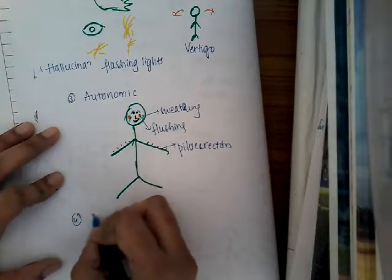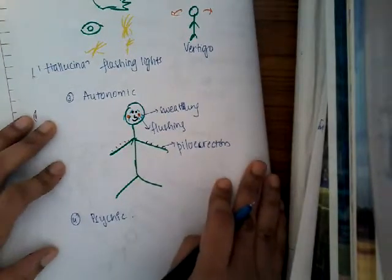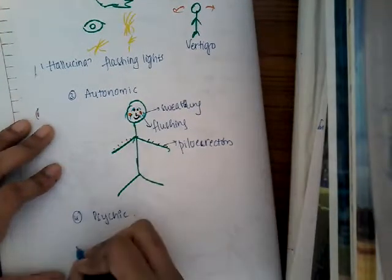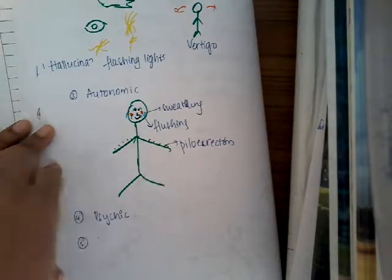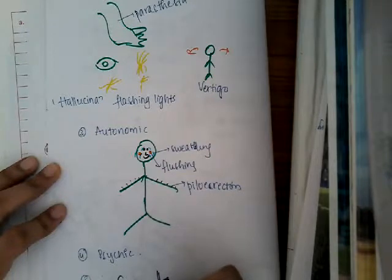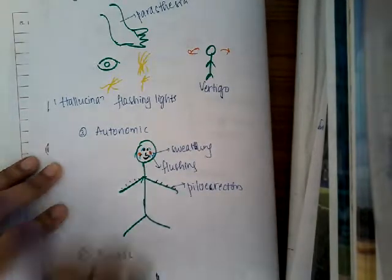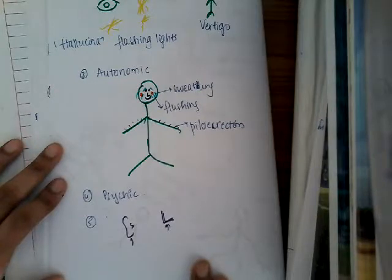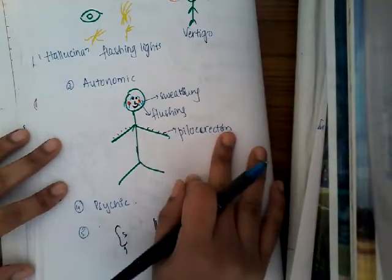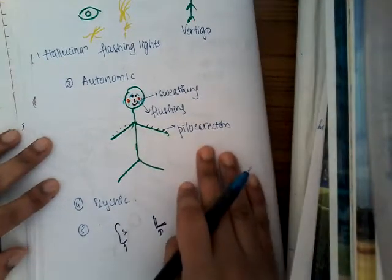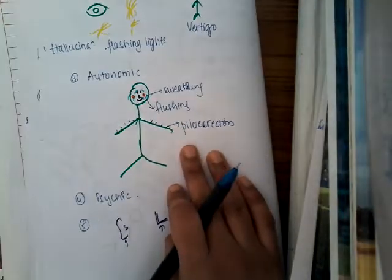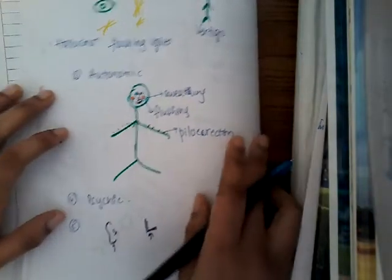The fourth type is Psychic Symptoms — alterations in higher cortical functions like memory. The fifth type is alteration in hearing and olfactory centers — hearing may go wrong or olfactory sensation may be altered. Some individuals with these focal seizures without discognitive features can also have fear, illusions, or depersonalizations — they cannot identify themselves. That covers focal seizures without discognitive features.